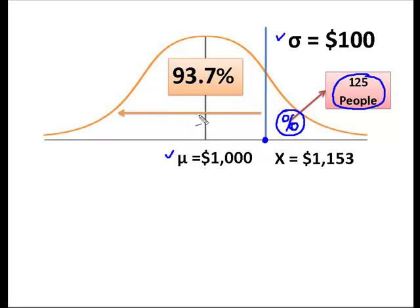Well, this one is pretty easy because I know that the entire curve equals one, and so if 93.7 falls between here and the end, then I know that 1 minus 0.9370 is going to give me 0.0630 left in this tail.